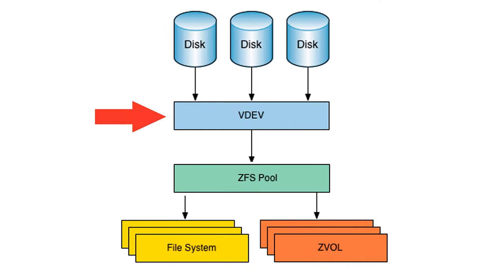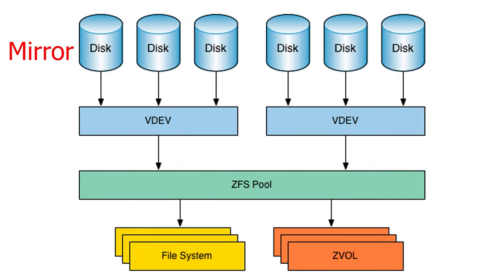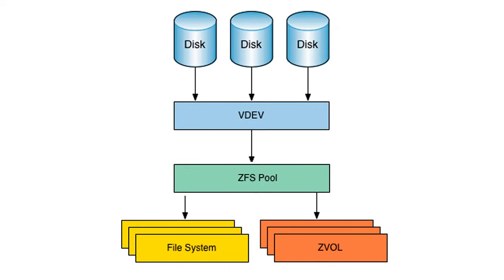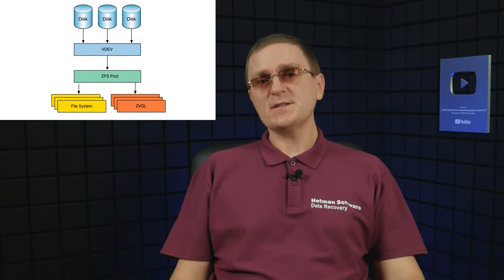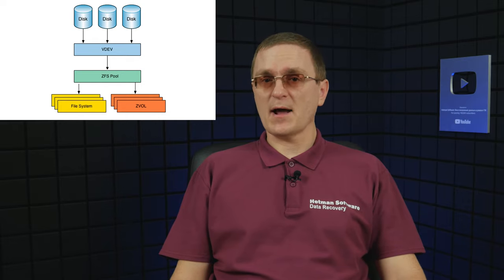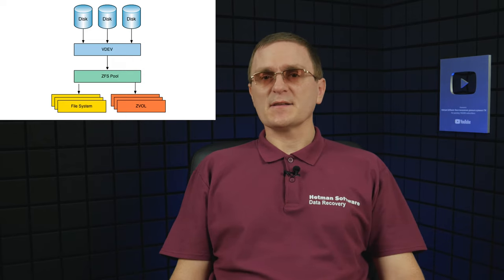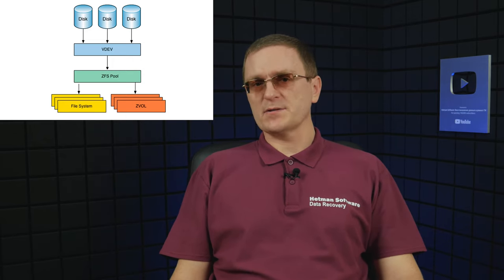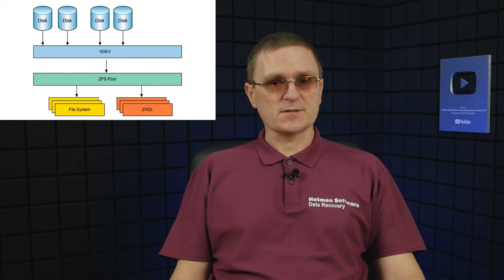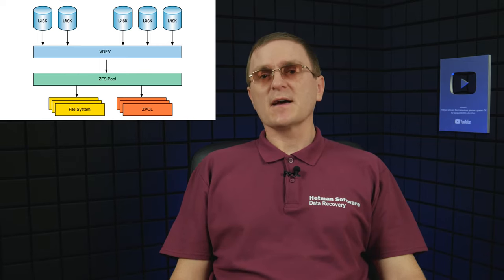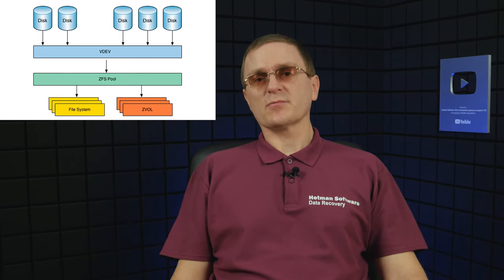A virtual device may consist of one or more physical devices. It can be a pool or a part of it, and it can have various redundancy levels — mirror, three-way mirror, RAID-Z, RAID-Z2, or RAID-Z3. RAID-Z is an implementation of a modified RAID-5, designed in ZFS to overcome the write hole error that often affects conventional RAID-5 systems. RAID-Z1 requires at least three disks — two for data storage and one for parity. RAID-Z2 should have at least four disks — two for storage and two for parity. For RAID-Z3, you need at least two disks for storage and three disks for parity.